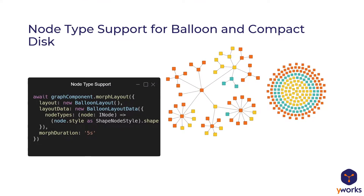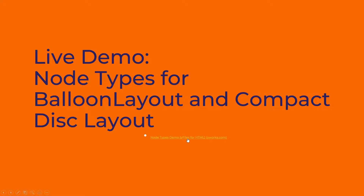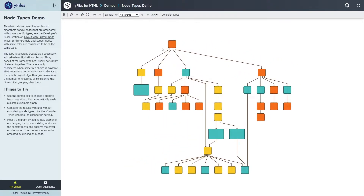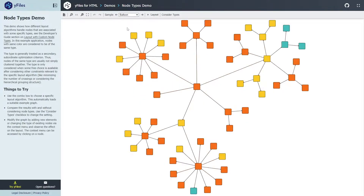Next is node type support for balloon and compact disc layouts. Last year we introduced the ability for many layouts to take into account the semantics of nodes — meaning that when nodes have a semantic type, this can be considered in the layout and optimized appropriately. Many users have been adopting these features, so we added them to two more layouts. Now both the existing Balloon Layout for tree-like structures and the new Compact Disc Layout support node types too. It's easy to configure, as this JavaScript code snippet shows. It's up to you how you define the type of a node — in this demo it's just color, but it could be anything, even something not visible in the diagram.